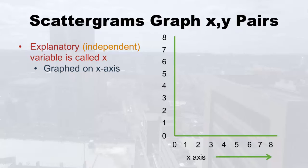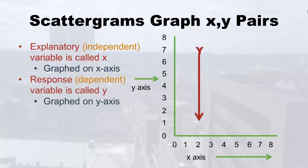So if I said here's an x, y pair and this one is the independent variable, or this one is the explanatory variable, you need to secretly know I'm talking about the x of the two. And the y is also called the response variable or the dependent variable, and it is graphed on the y-axis.